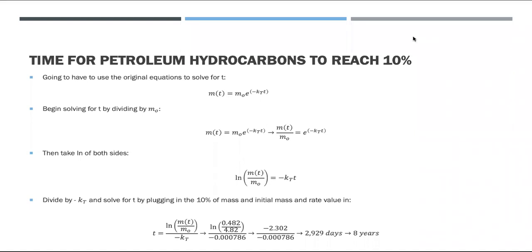In order to find out how long till it's at 10% of its mass, we need to solve for T. We start by dividing the final mass by the initial mass. Then we take the natural logs of both sides. Finally, we divide by negative K_T and are left with T equals ln of the final mass divided by the initial mass, all of that divided by negative K_T.